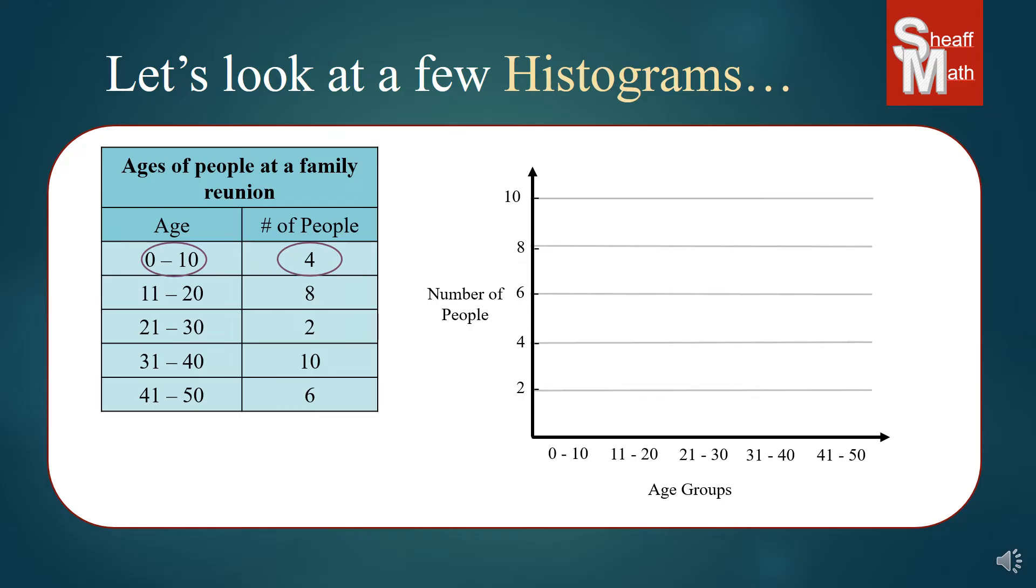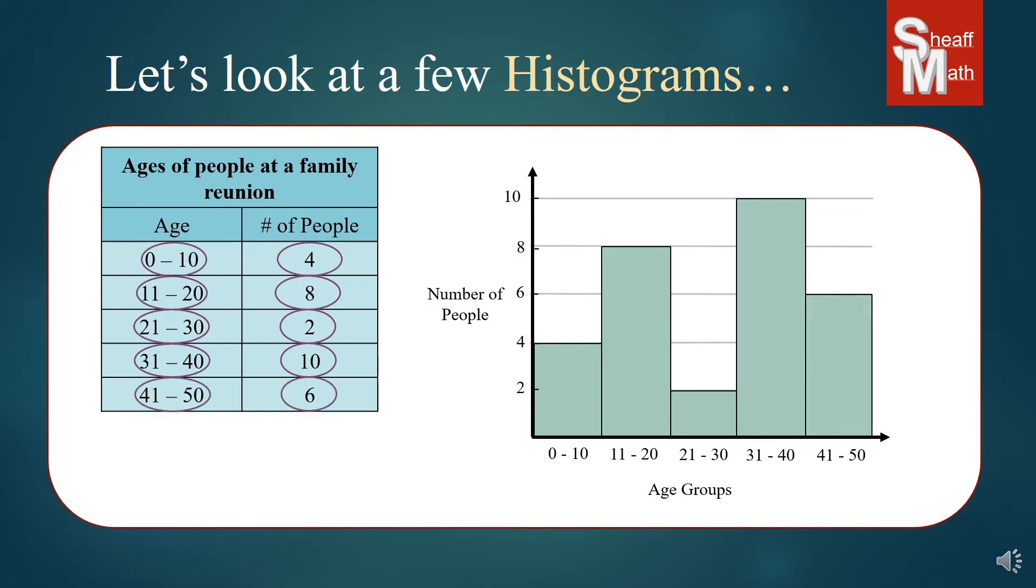Zero to ten, we have four people, so we make sure we go to four. Eleven to twenty, we have eight, so we have that bar. Twenty-one to thirty, we have two, so we put there. Thirty-one to forty, there's ten, so that goes all the way up to the ten. And then, forty-one to fifty is six, and we go to six.